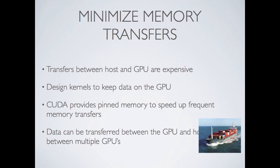To reinforce this: minimize memory transfers. Transferring between the host and GPU is expensive. Design kernels to keep data on the GPU and don't keep sending it back and forth — you can keep data in GPU memory between kernel calls. CUDA does provide pinned memory, which speeds up frequent memory transfers by allowing direct access to host memory by the GPU, but this is not available in OpenCL. For multiple GPUs in OpenCL, you typically need to execute kernels on each GPU completely separately.